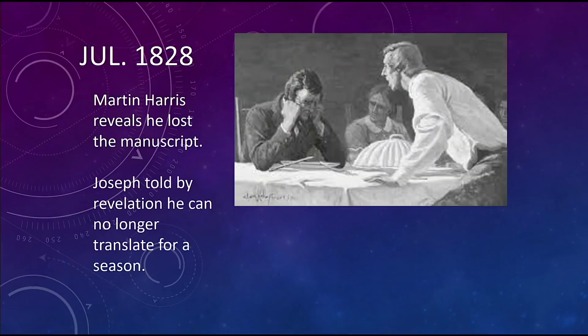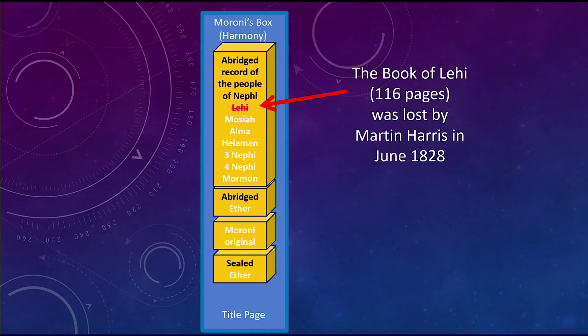Martin Harris lost the manuscript. Joseph got all upset; he was told he couldn't translate for a while. The Lord got upset with him too. This is all leading into section 10, which was this week's lesson. The 116 pages, which was the Book of Lehi, was lost by Martin Harris and has never been recovered. Joseph had to give up the plates. On the diagram, I put in gray to show what was translated in red but then lost.